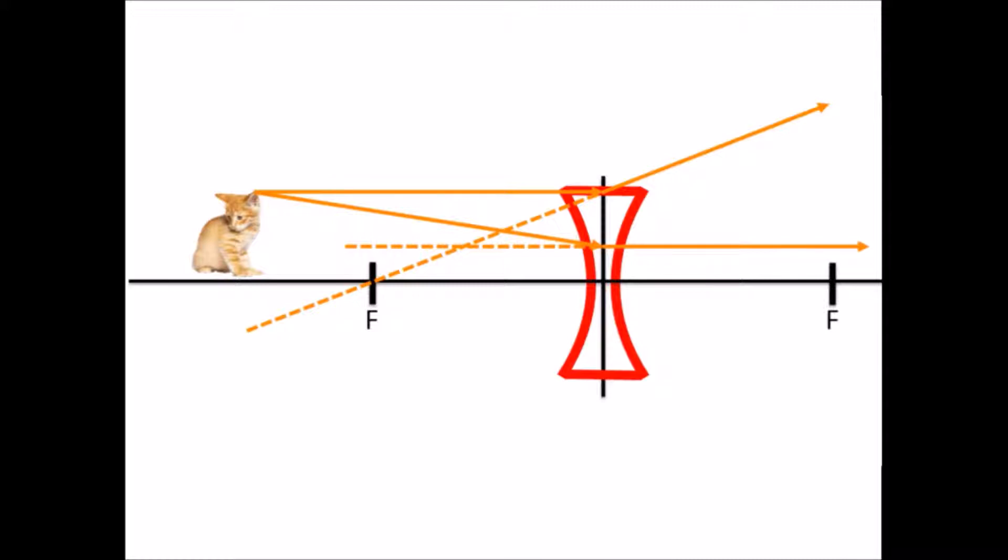So now we trace that second ray back as a dotted line. We have two dotted lines that cross between the cat and the lens. That point is where the image appears.